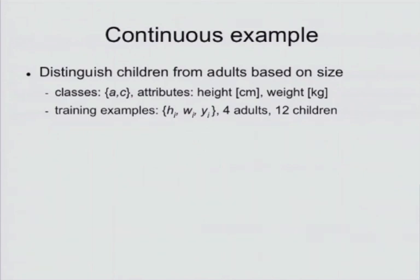And we have two attributes, so the classes are A and C, and we measure their height and we measure their weight. What we want to do is get Naive Bayes to learn to predict whether an individual is a child or an adult based on their height and weight.